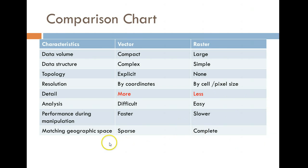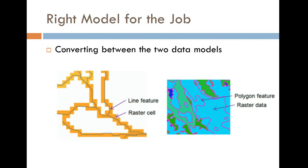Rasters are often complete in that they cover a whole landscape - often just a continuous image, not always. One thing you're going to do in the first or second lab is convert. Sometimes you want your data in one format or the other, so you can convert raster to vector and vector to raster. You lose some information, but sometimes you can get information you couldn't get any other way. If I take vector road data and turn it into rasters, then I can do a nice overlay with raster soils data.